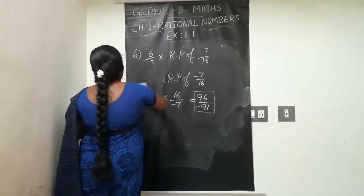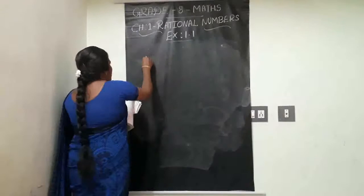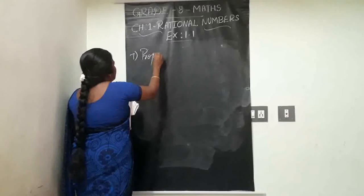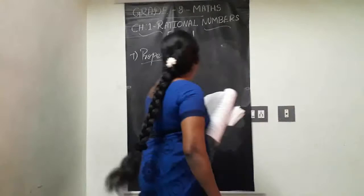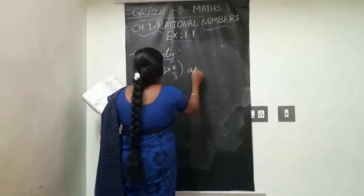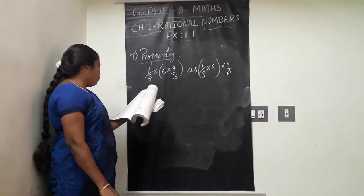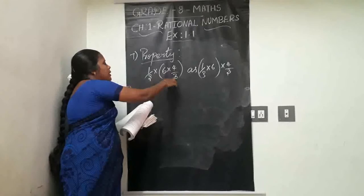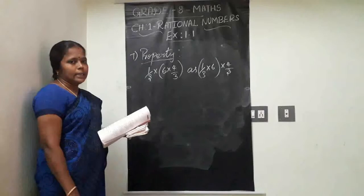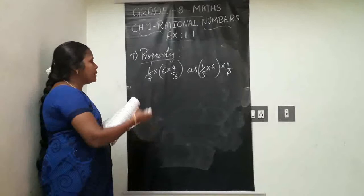Seventh question: tell what property allows you to compute 1/3 times (6 times 4/3) as (1/3 times 6) times 4/3. This type of regrouping in multiplication — which property allows this? We have seen this under multiplication.